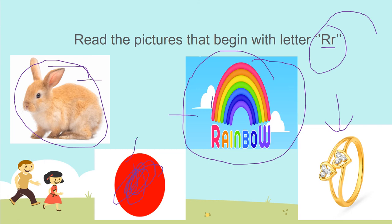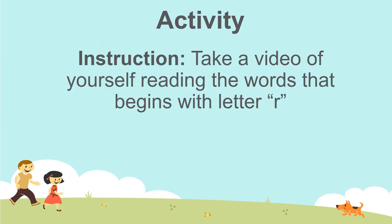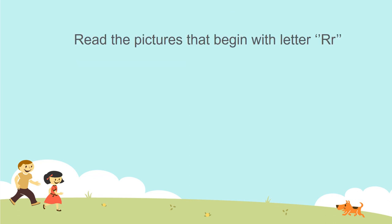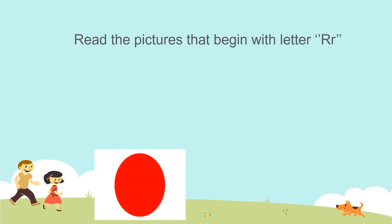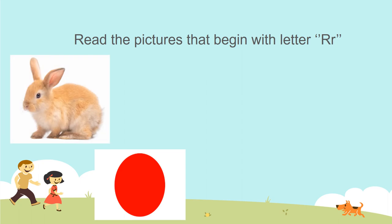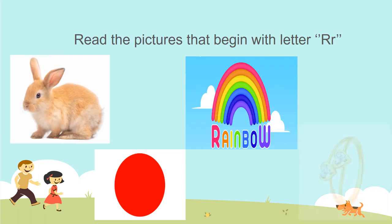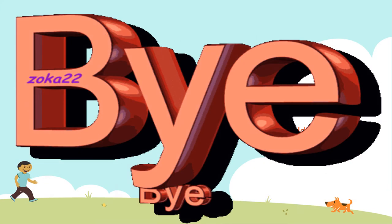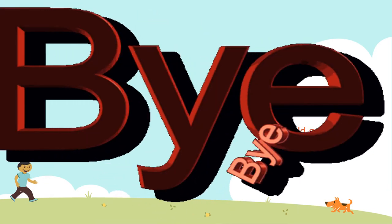So we have rabbit, red, rainbow, and ring. For your activity, I want you to take a video of yourself reading the words that begin with letter R. While you are reading the words or pointing to the pictures, mommy and daddy will take a video for you. Thank you for listening, have a nice day!